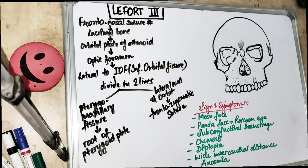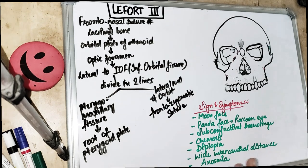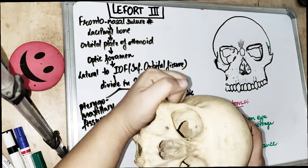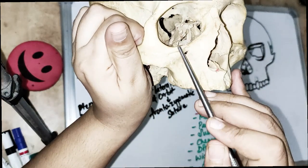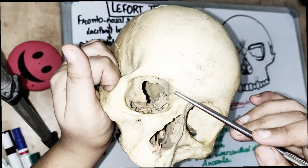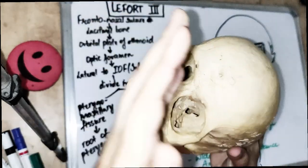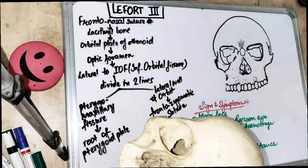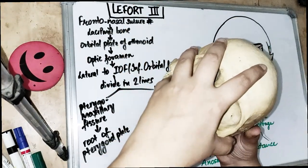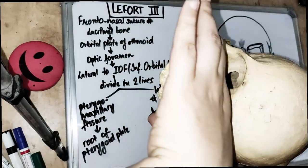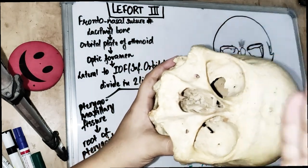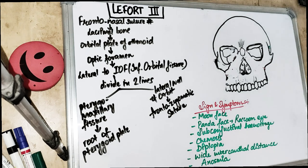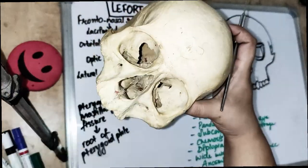Open bite and elongation of the face are seen in all three Le Fort fractures. We have already covered Le Fort 1 and Le Fort 2 in a previous video. Le Fort 1 and Le Fort 2 are subzygomatic fractures — fractures below the zygomatic arch. Le Fort 3 fracture is above the zygomatic arch, making it a suprazygomatic fracture, and because it is at the highest level of the mid face, it is also known as a high-level fracture.